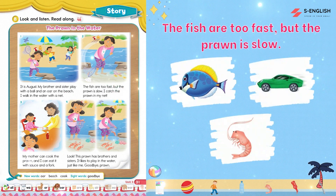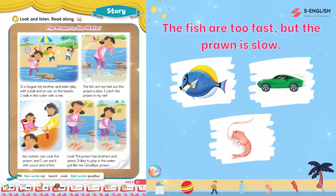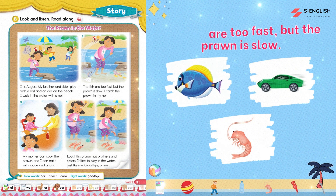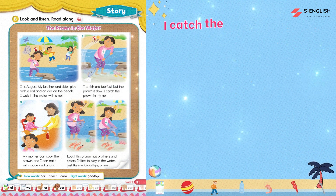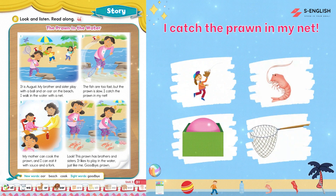Two. The fish are too fast, but the prawn is slow. I catch the prawn in my net.